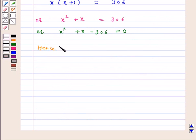Hence, the required equation is x squared plus x minus 306 equals 0.